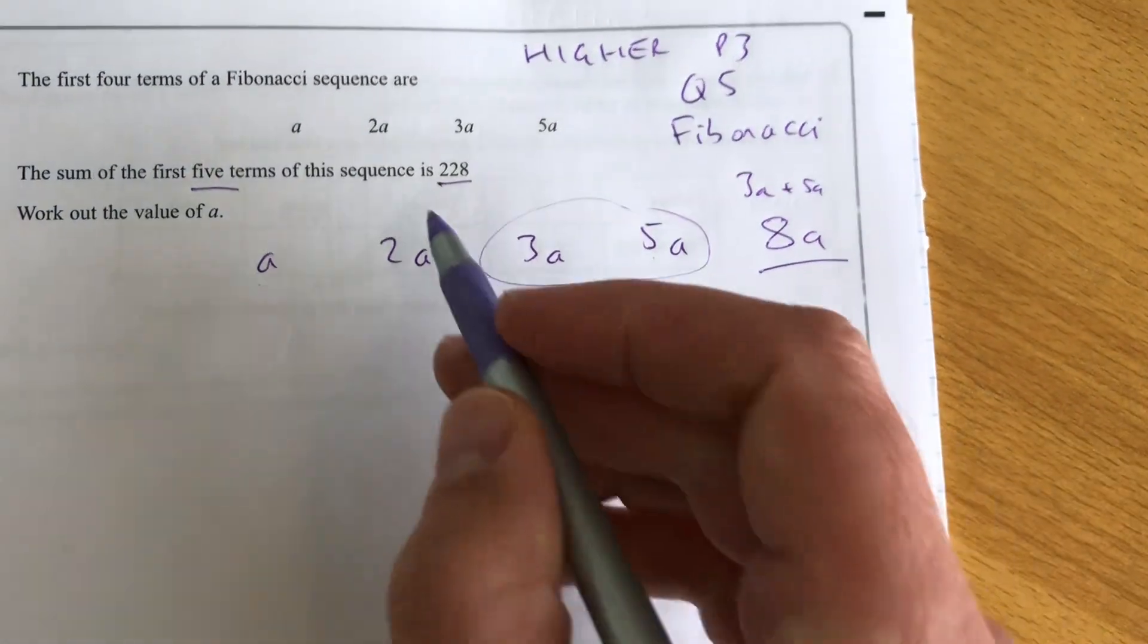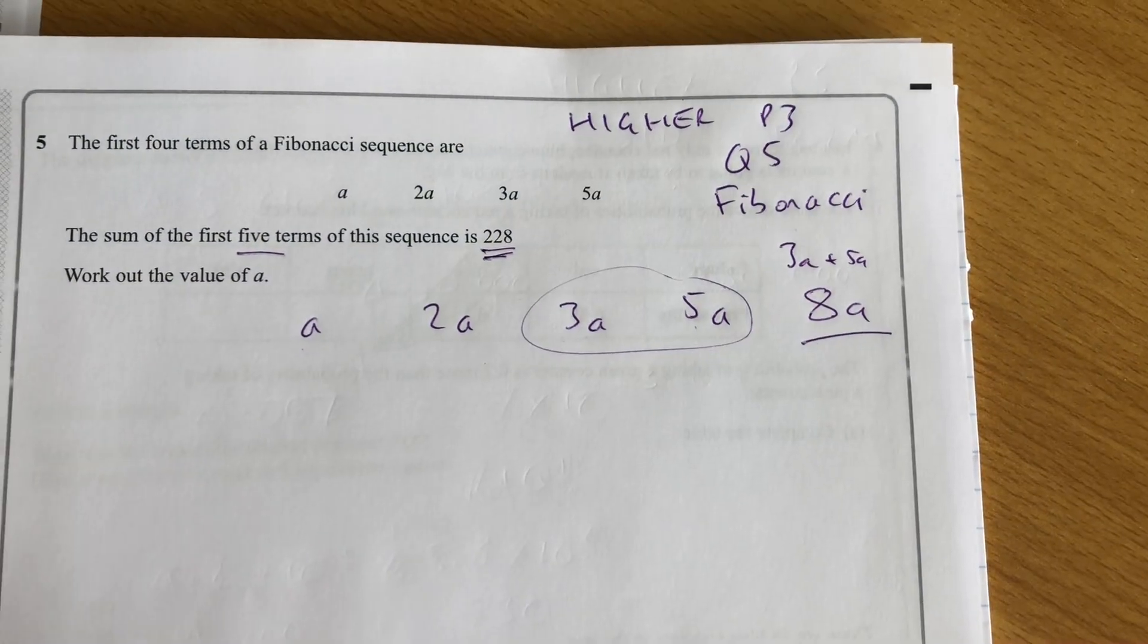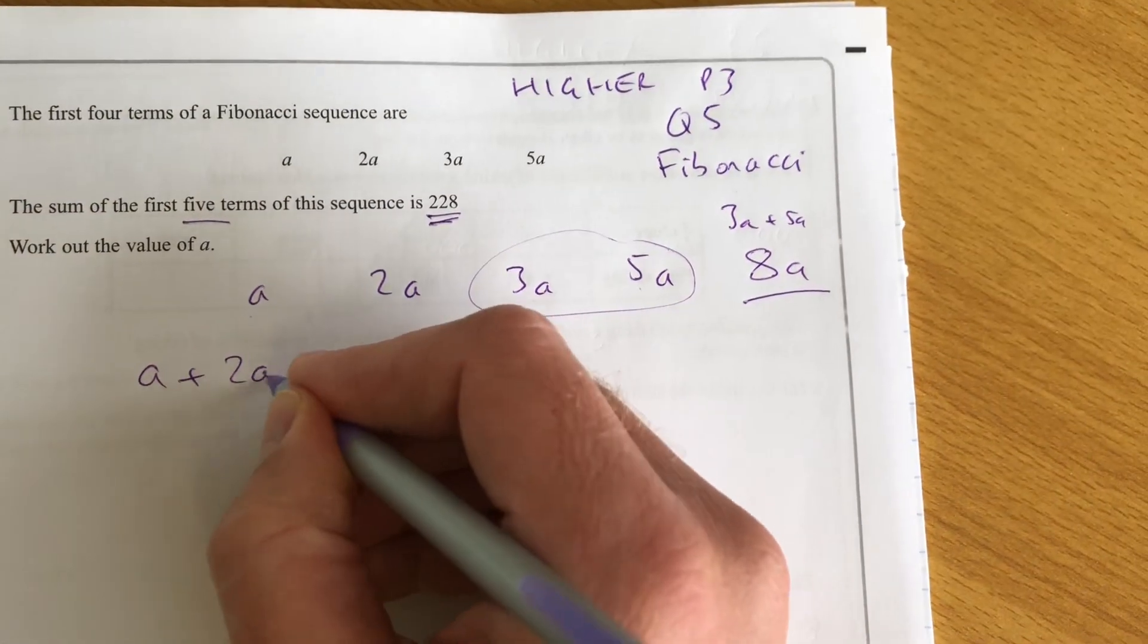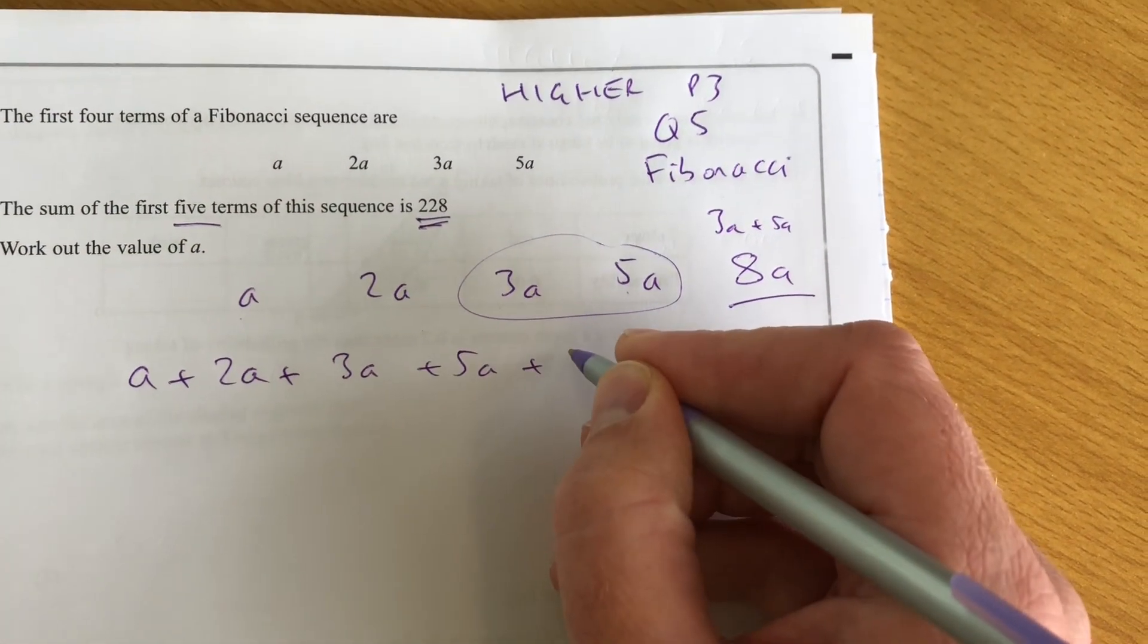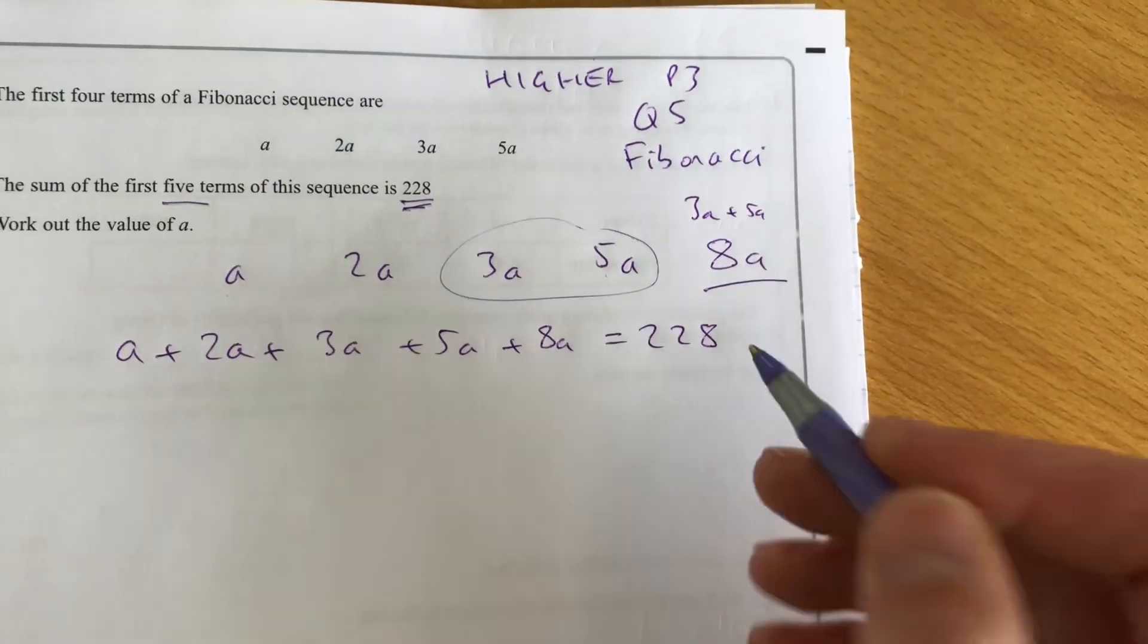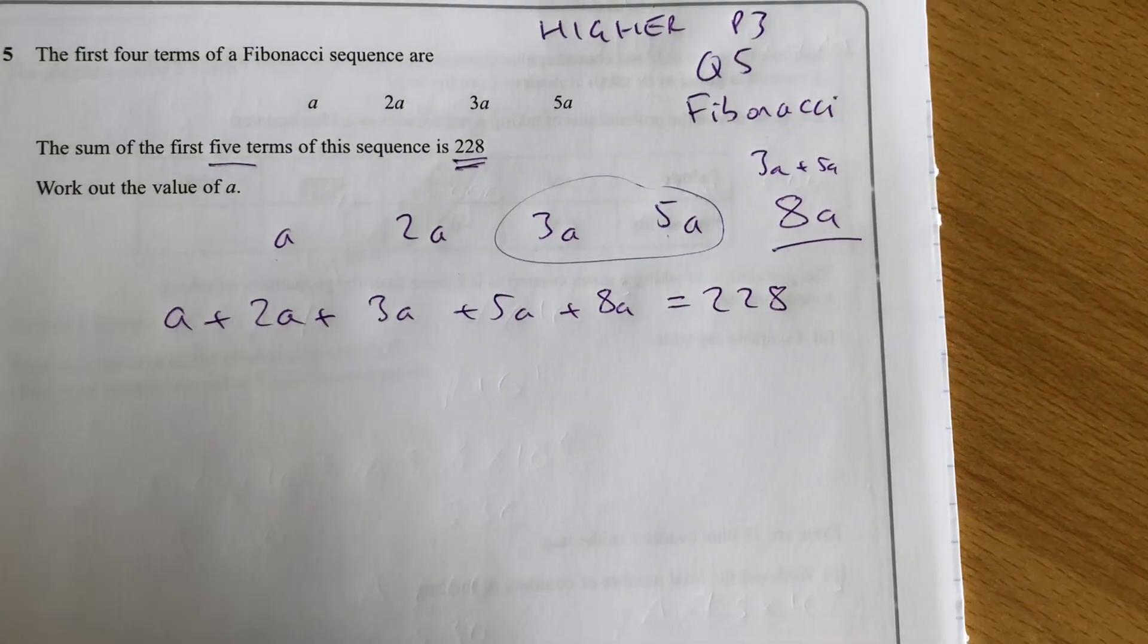Okay, great. So now, what do I do with those five terms and that 228? You make it into an equation. So you do A plus 2A plus 3A plus 5A plus 8A equals 228. So now we're going to use some algebra and that's the wonder of algebra where you can set up an equation and solve a problem.